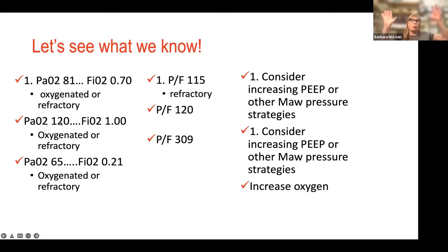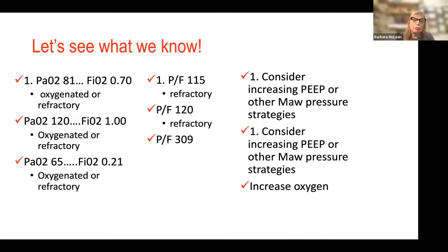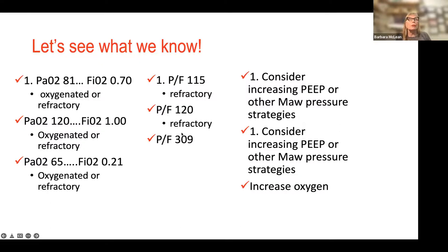Second patient: PO2 is 120. You might be ecstatic — that's a great PO2 — but he's on FiO2 of 100%. His P:F is 120. His PO2 looks great, but this patient is also refractory. Refractory hypoxemia doesn't mean the PO2 doesn't improve when you apply oxygen — what you're trying to do is improve the ratio. If the ratio is poor and you increase oxygen, PO2 will go up but the ratio won't improve. That ratio staying constant says you're blowing a lot of oxygen but what you really need is a mean airway pressure strategy.